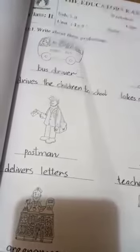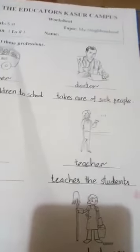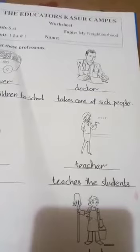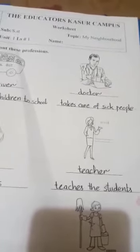Now is the turn of our worksheet. You can see many pictures of different professions in this worksheet. First picture is the bus driver. What is the job of the bus driver? He drives the children to school. Bachon ko school le ke jaana aur le ke aana yeh bus driver ki responsibility hoti hai. Next is doctor. What is the job of the doctor? Takes care of sick people — sick aur bemaar logon ka khayaal karna, unki dekhbaal karna.